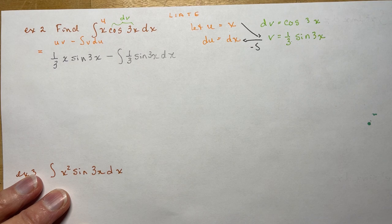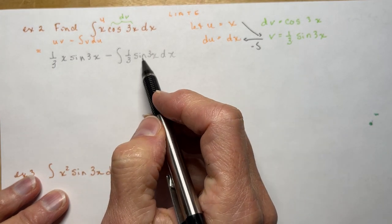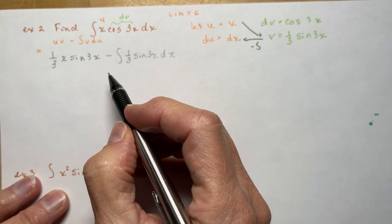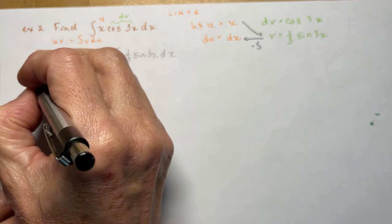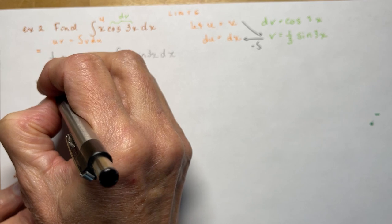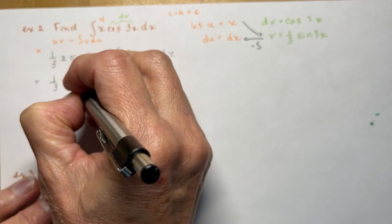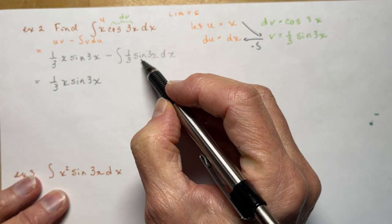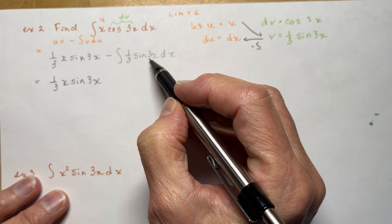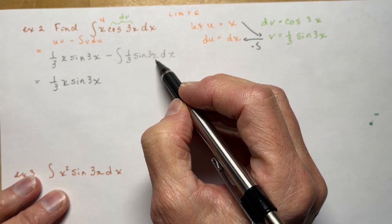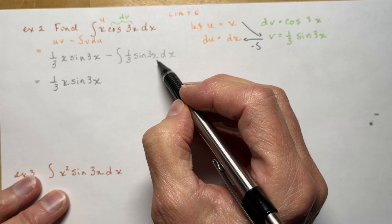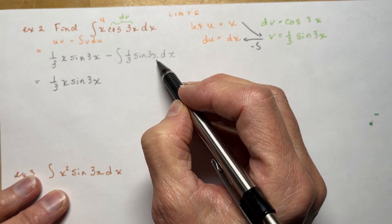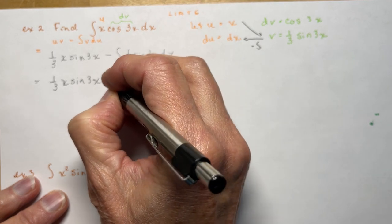So remember that if you have the integral of a constant, you can take the constant out front. So I have (1/3)x·sin(3x). Now when I take the integral of sin(3x), I'm going to have (1/3)cos(3x) — but it's going to be negative, so that's going to make this positive.